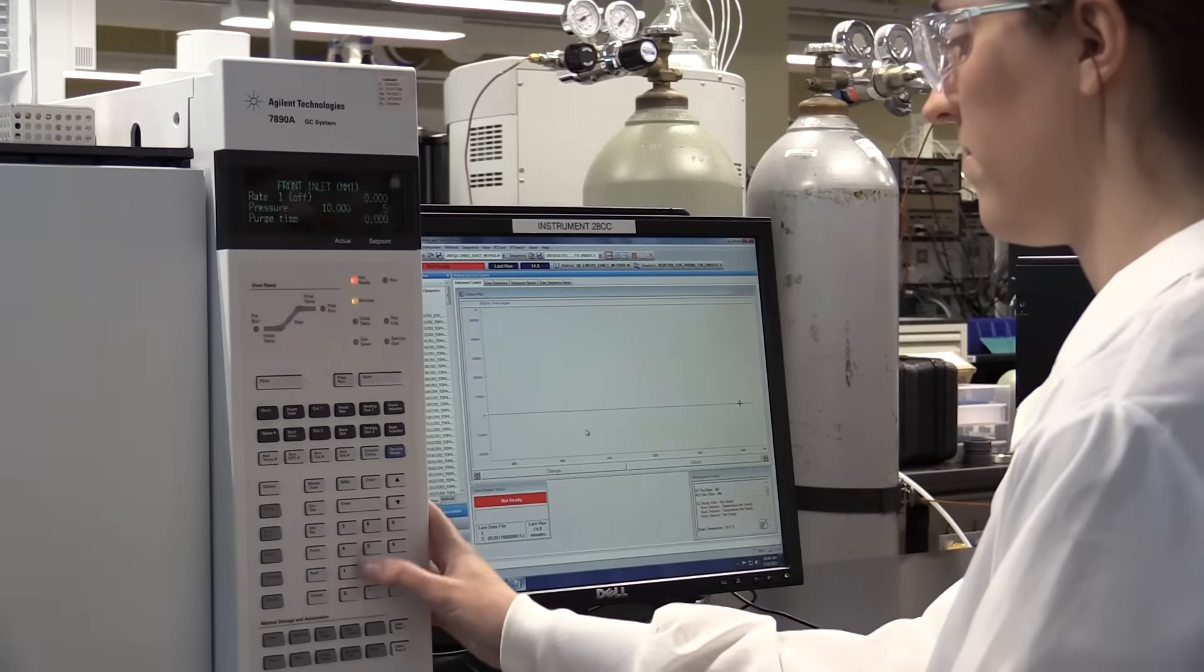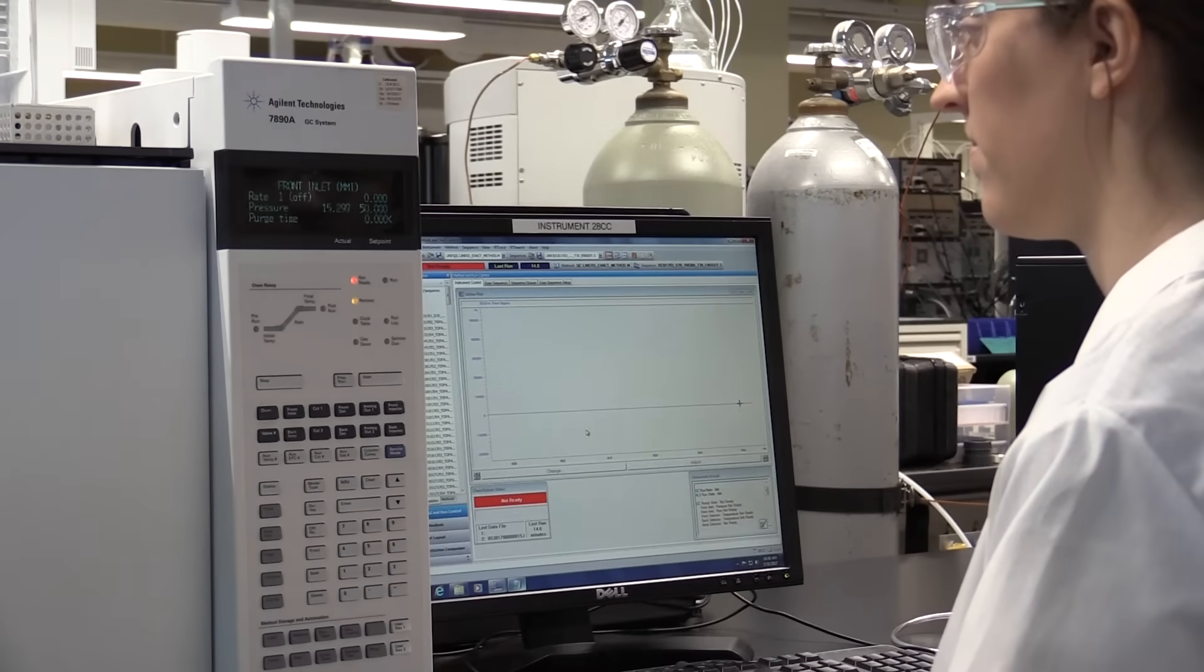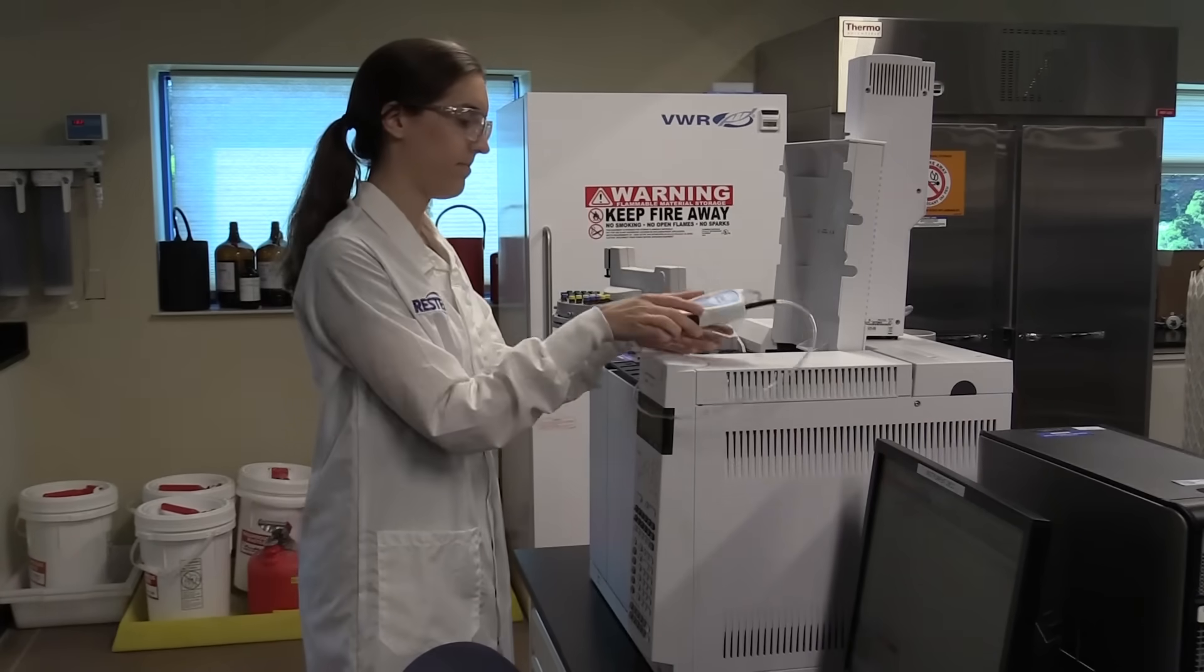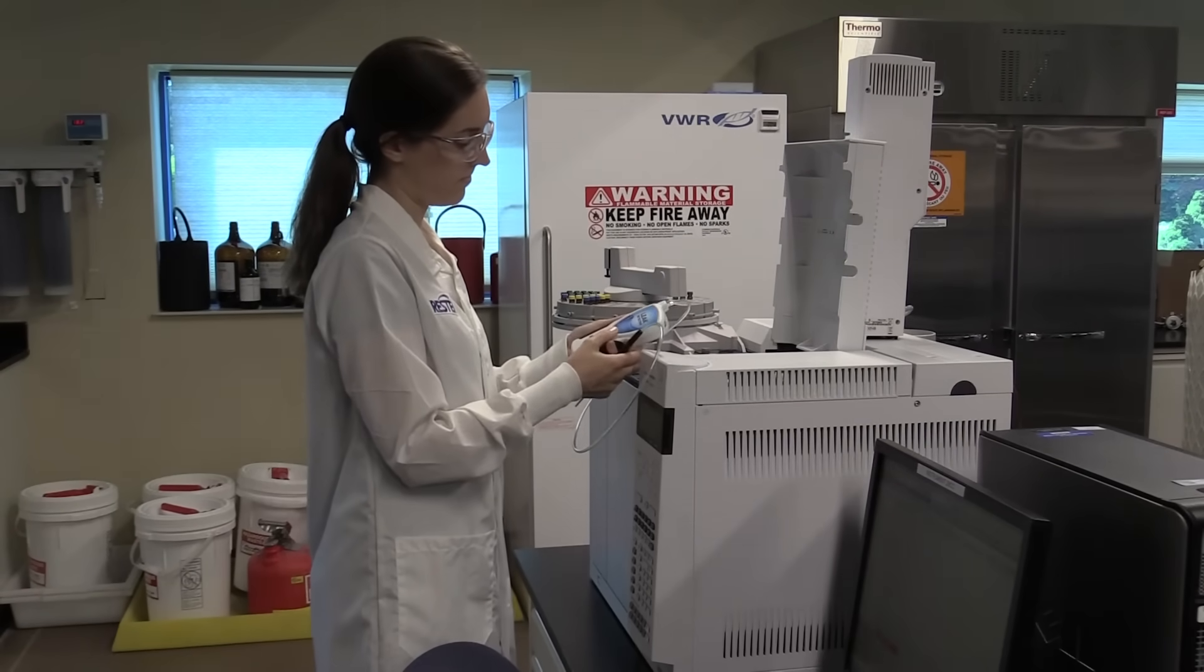Prior to leak checking a GC, we recommend that you increase system pressure while the GC is cool to accentuate any potential leaks and make them easier to detect. Then, after bringing the system up to operating temperature, be sure to recheck critical seals.